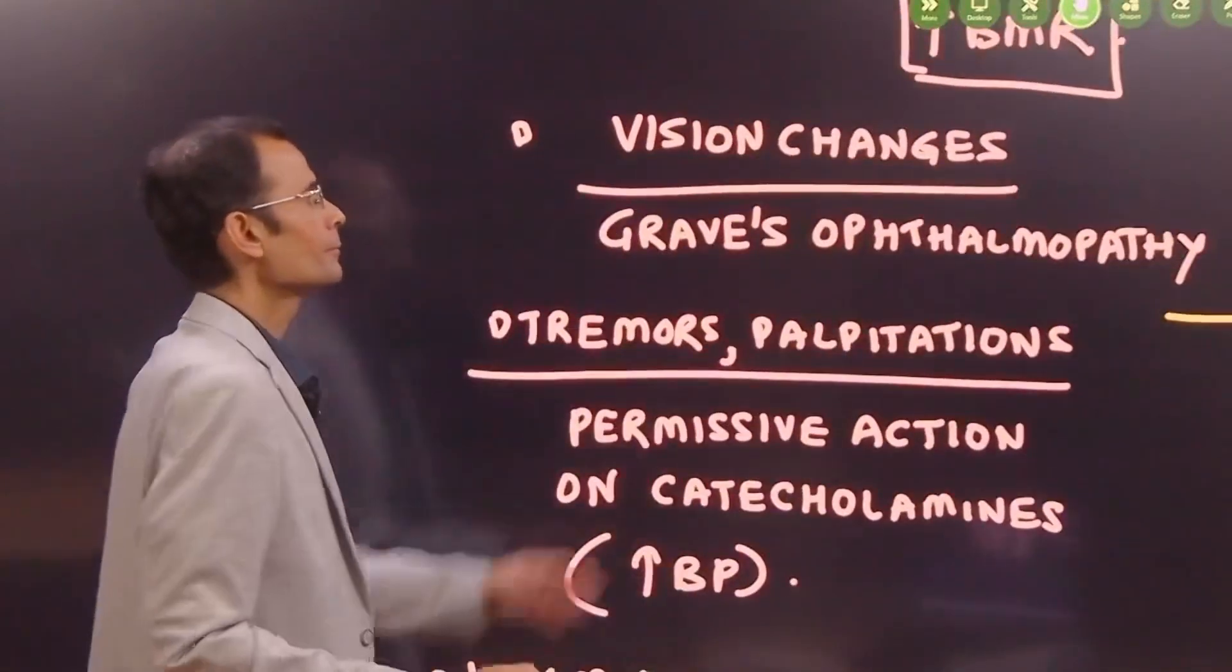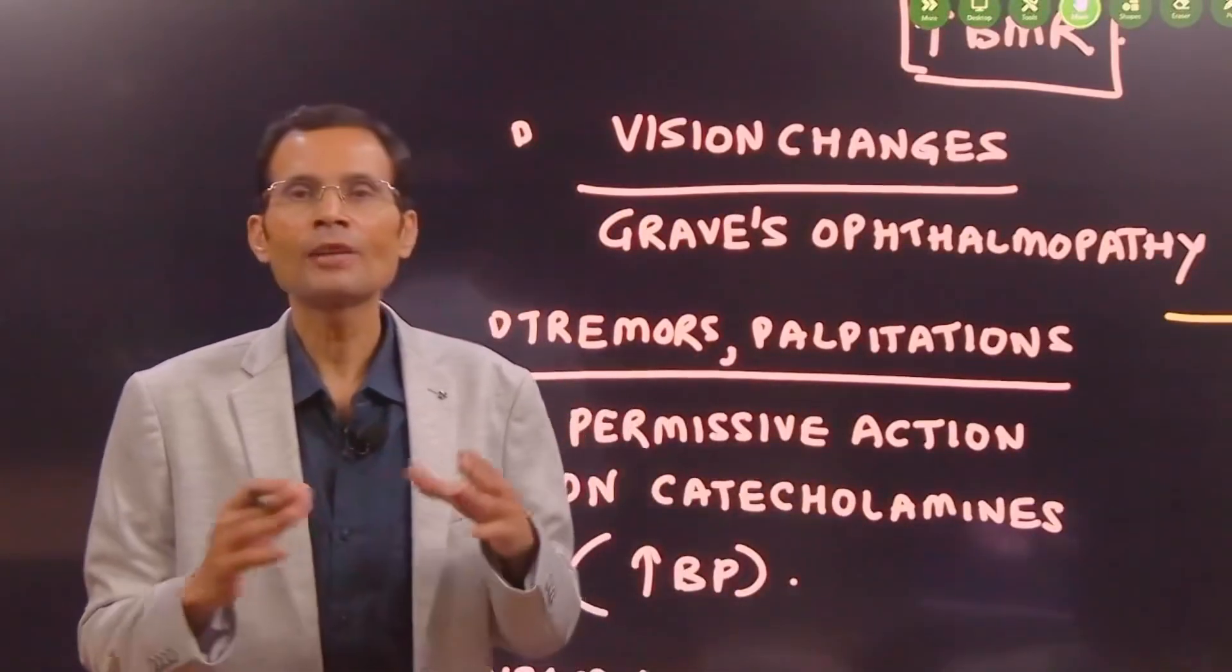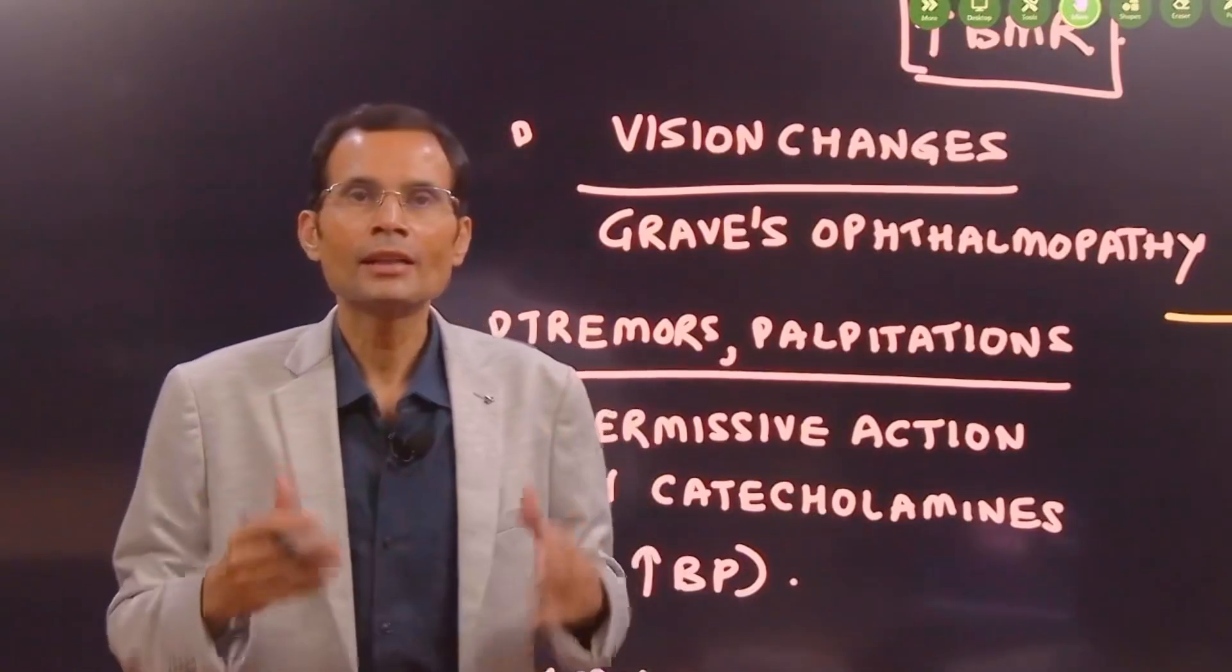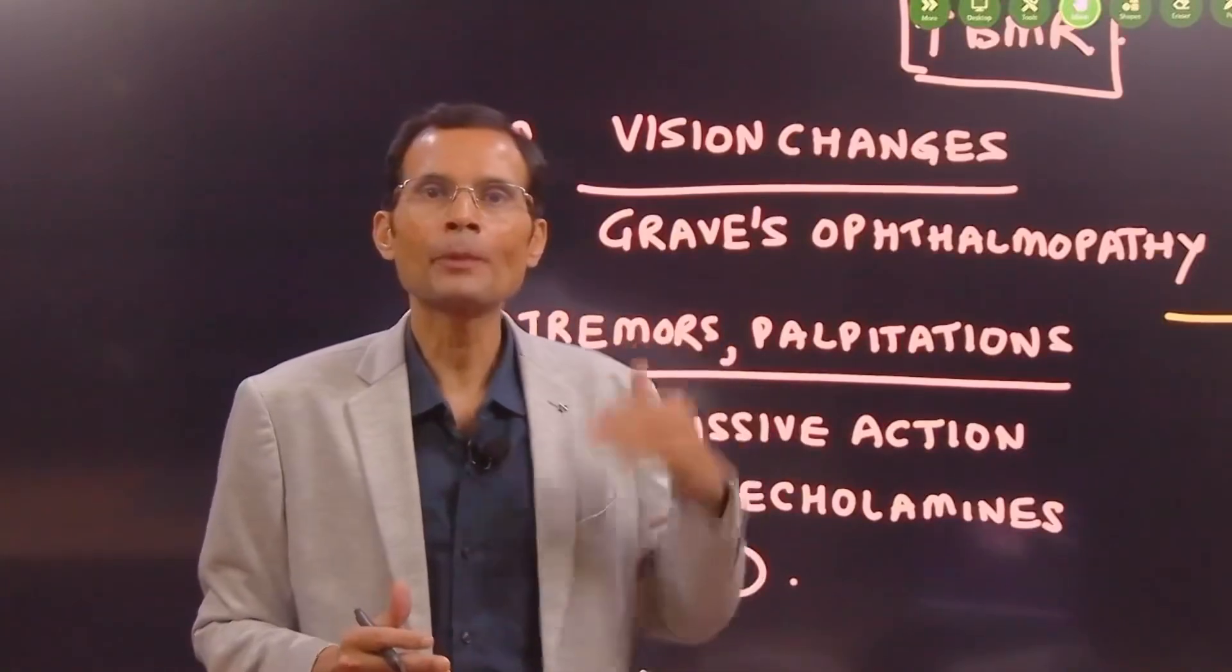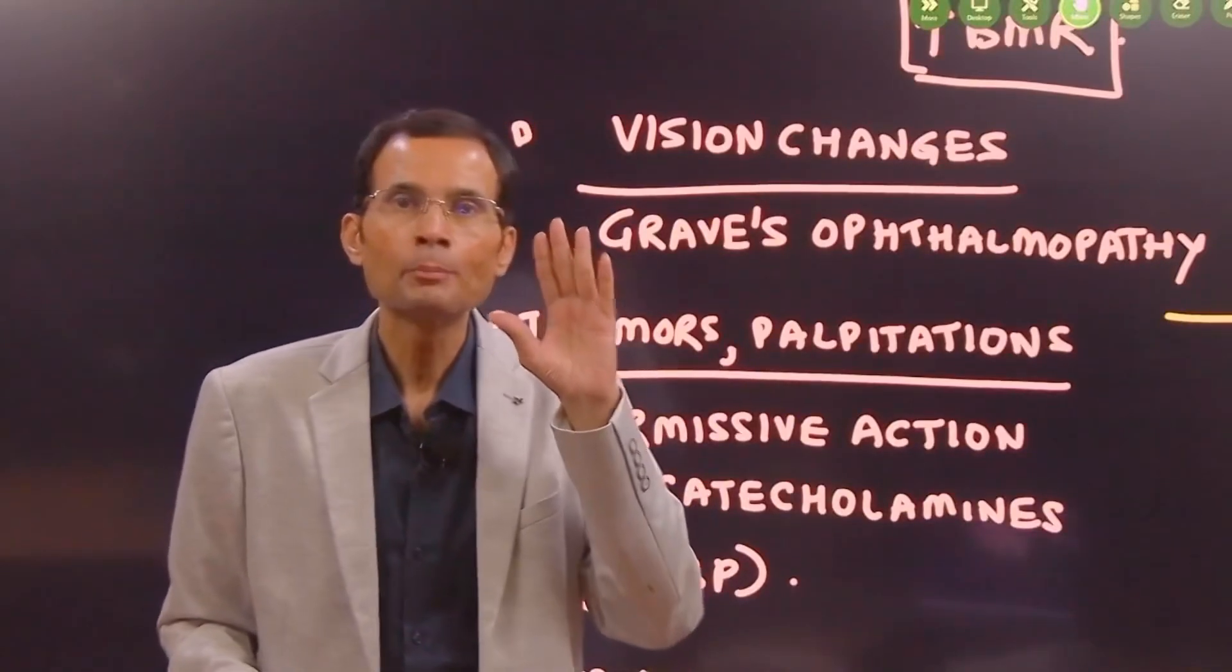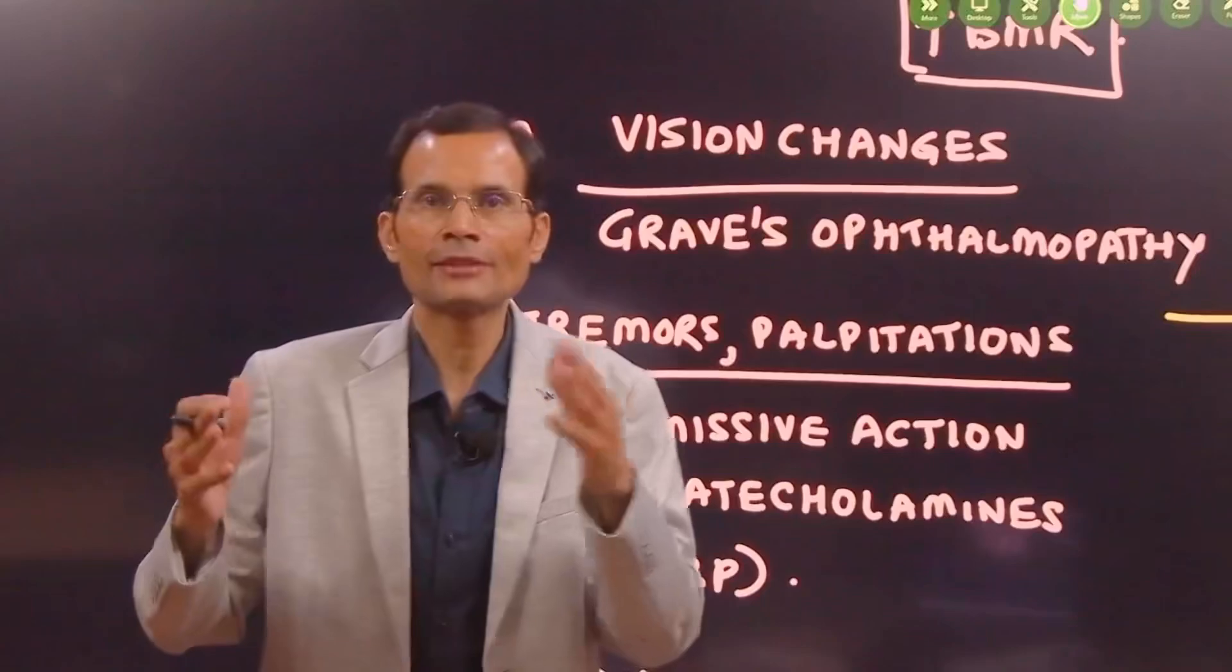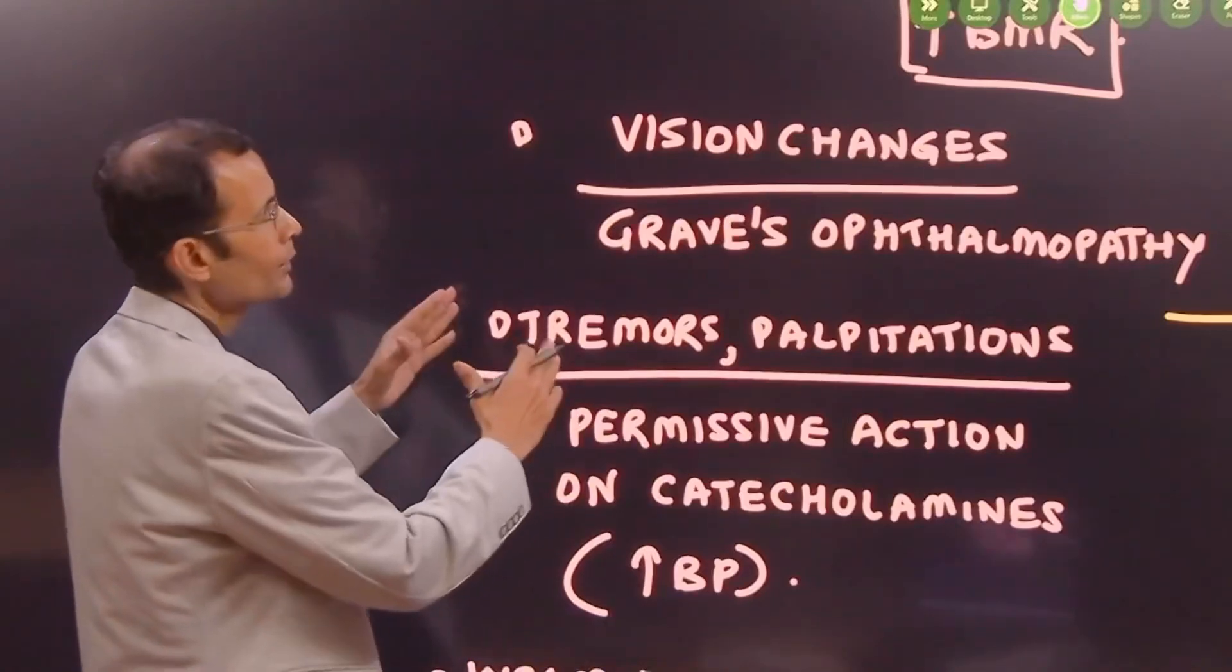Talking about the vision changes. If you have read of Graves' ophthalmopathy, well, in Graves' disease, it is known that there are two things that happen related to the vision changes. One is there is a deposition of fat and fluid in the retrobulbar space. You will have to write it in a 10 marks question. So, the eyeball is pushed forward resulting in what is called as exophthalmos.